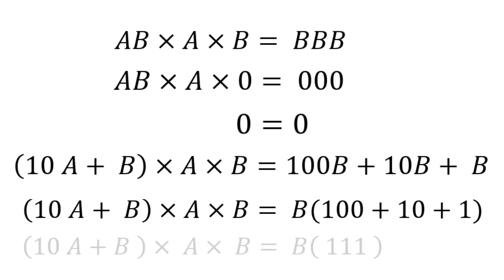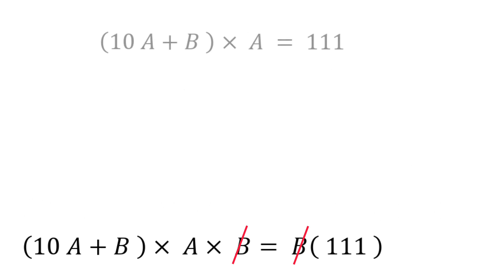10 times A plus B times A times B equals 111 into B. On both sides of the equation, we can cancel that B. Then we have 10 times A plus B into A equals 111.